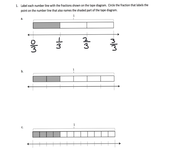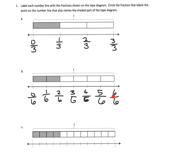It's important that students see that three-thirds is equal to the whole thing, and zero-thirds is really the same thing as zero. Down here, we can see that it's been cut into six pieces, so this is zero-sixths, one-sixth, two-sixths, three-sixths, four-sixths, five-sixths, and six-sixths, equaling that one whole thing.